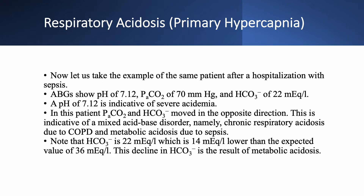Now take the same patient after sepsis: pH 7.12, PaCO2 70, bicarbonate 22. A pH of 7.12 indicates severe acidemia. High PaCO2 confirms chronic respiratory acidosis from COPD, but now PaCO2 and bicarbonate moved in opposite directions — PaCO2 went up while bicarbonate went down. The actual bicarbonate is 22, which is 14 lower than the expected 36. This decline is due to metabolic acidosis from sepsis. So we have a mixed disorder: chronic respiratory acidosis due to COPD and metabolic acidosis due to sepsis.